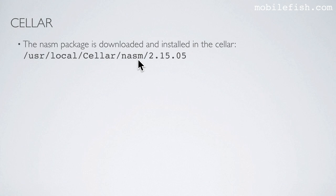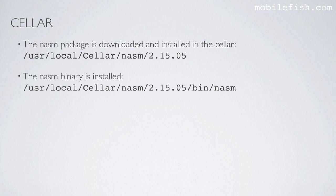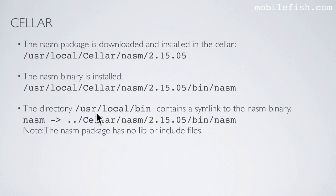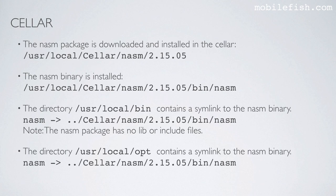This is the package name and this is the version number. The NASM binary is installed, as you can see over here — this is the executable. This directory contains a symlink to the NASM binary, as you can see. Please note, the NASM package has no libraries or include files. The directory /usr/local/opt contains a symlink to the NASM binary, as you can see over here.